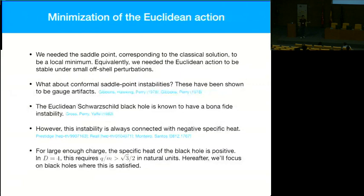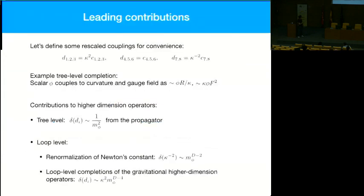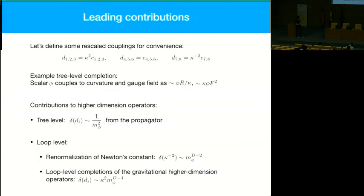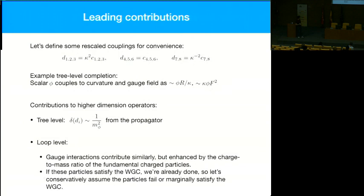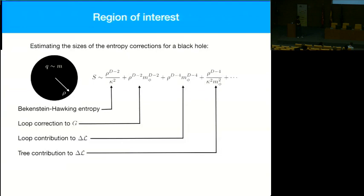All that remains is to compute delta S in the two theories and get our positivity bound. The higher dimension operator coefficients c_{1-3} are for R-squared terms, c_{4-6} for RF-squared terms, and c_{7,8} for F-to-the-fourth terms. We want delta S being positive to imply a positivity bound on the d_i's. We have to keep track of other effects of introducing these extra massive states — for example, Newton's constant could be renormalized, and introducing these states could introduce loop corrections to the operators, but those are always smaller.